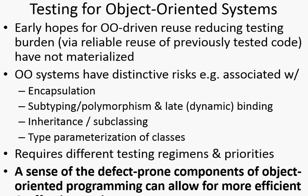Inheritance and subclassing come with their own substantive risks. A separate person writes the superclass than the subclass, and the subclass calls things that involve the superclass. But the superclass may evolve separately from your subclass.